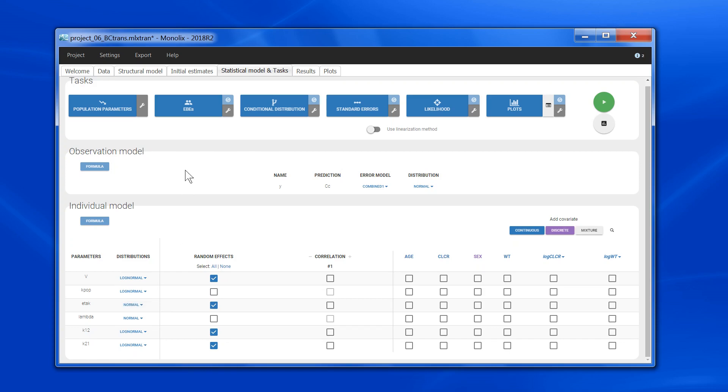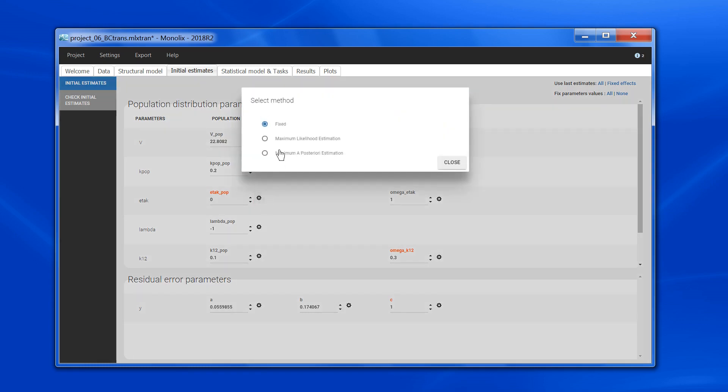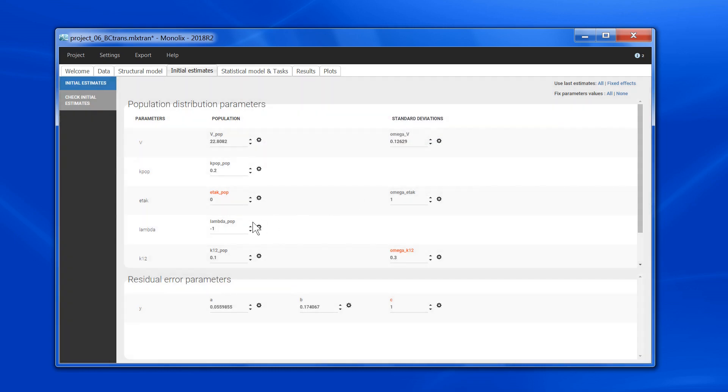So I set it to normal here, and in the initial estimates, I need to fix a value to zero. So I set a value of zero here, and then in the settings, I can set it as fixed. For lambda, I have chosen minus one as an initial value, according to what I have seen in the previous run. Note that you cannot choose zero as initial value, because zero is a forbidden value, because in the model we divide by lambda, and we cannot divide by zero.